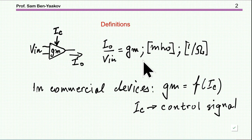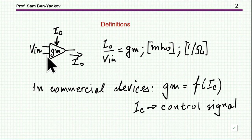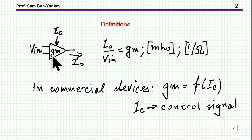The units of GM are mhos — one over ohms. In a commercial unit, GM can be controlled by a signal, usually a current, so that you can change the value of this coefficient between the output and the input signals.